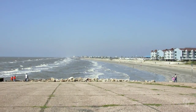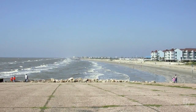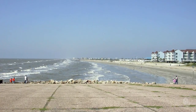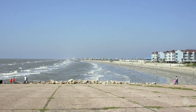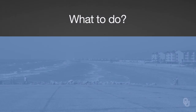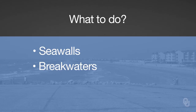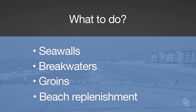Those are offshore bars that migrate landward during the summer and add sand to the beach. So what do we do about this problem? If sea level is rising and barrier islands are moving landward, what do we try to do? Well, one thing we do is build a seawall. We also build breakwaters, groins, and use a process called beach replenishment.